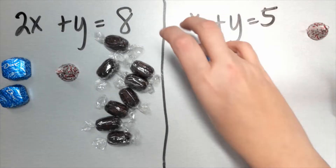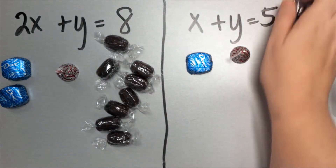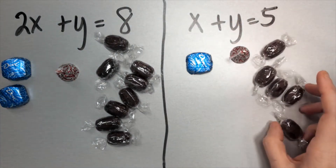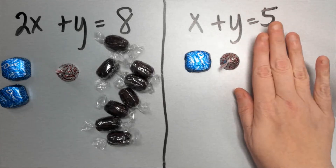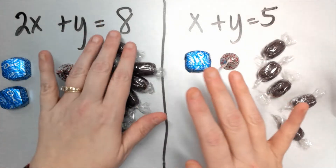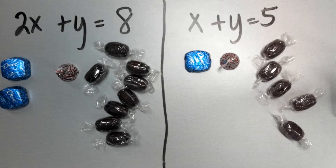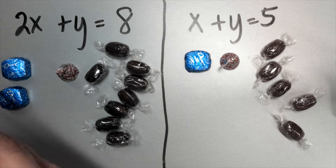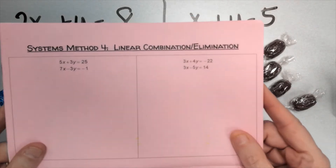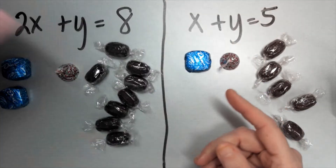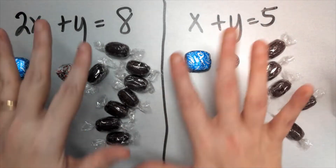Over here I have one X, one Y, and five root beer barrels, so X plus Y equals five. And over here, two X plus Y equals eight. We have two equations, making this a system. I want to solve this while it's in standard form rather than converting to slope-intercept form.